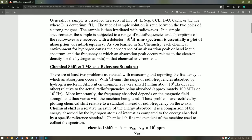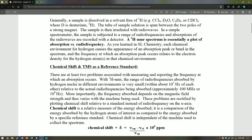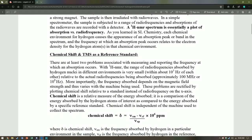Essentially, what a proton NMR spectrum is, is a plot of absorption versus frequency of radio wave EMR subjected to it. So as you learned in SL Chem, each chemical environment for hydrogen causes the appearance of an absorption peak, or a band in the spectrum, and the integration traces how many hydrogens are in that particular environment, which corresponds to that peak.